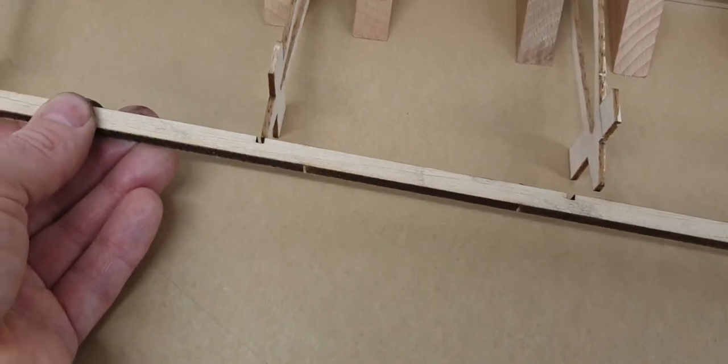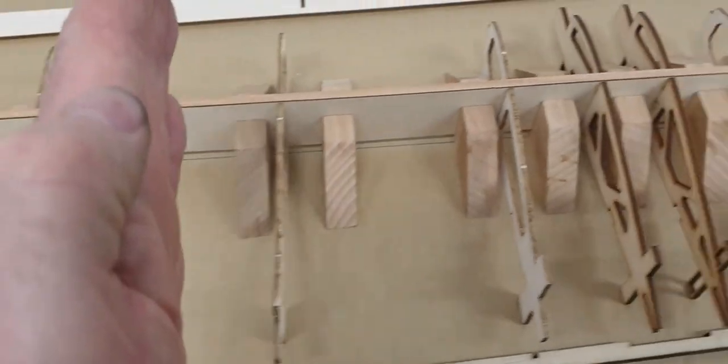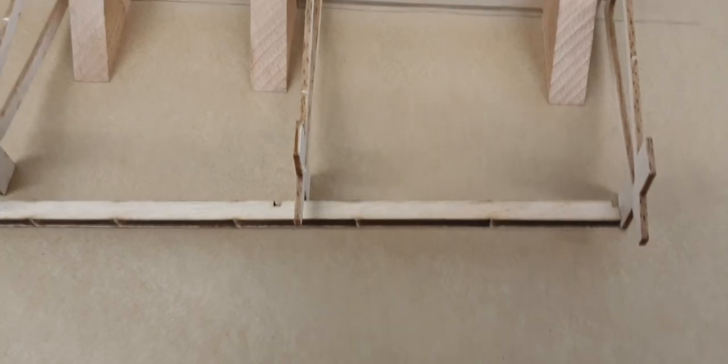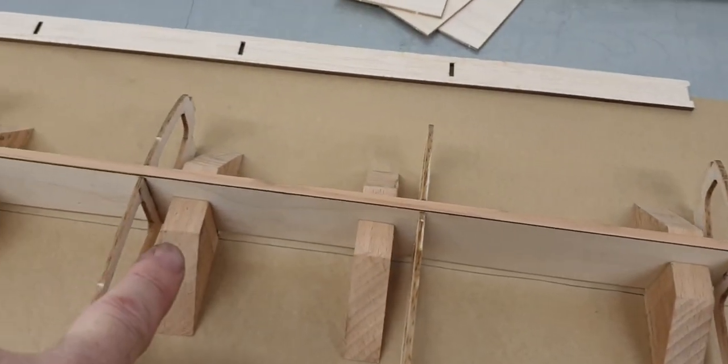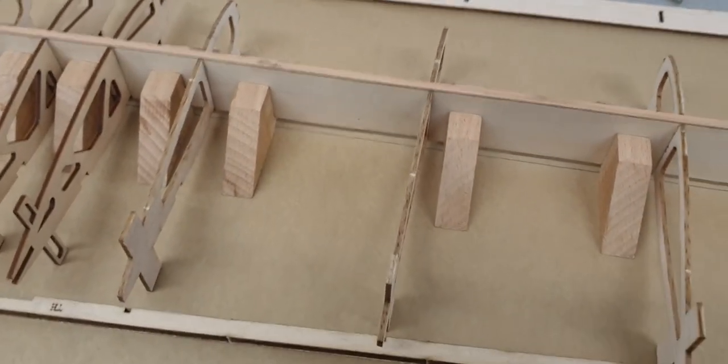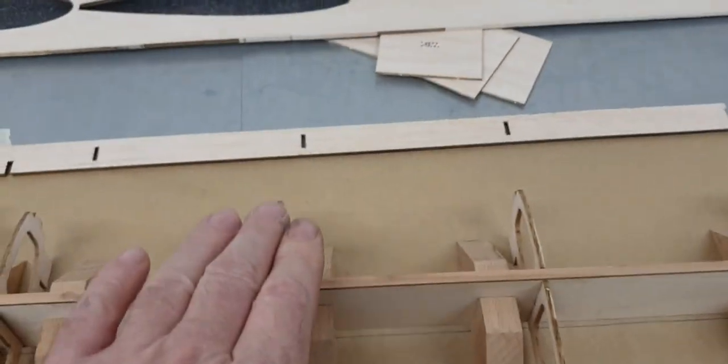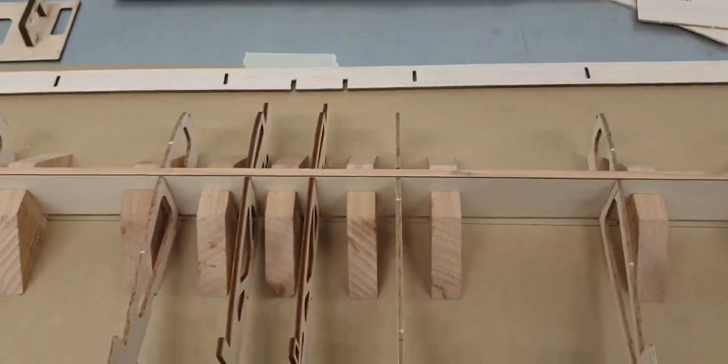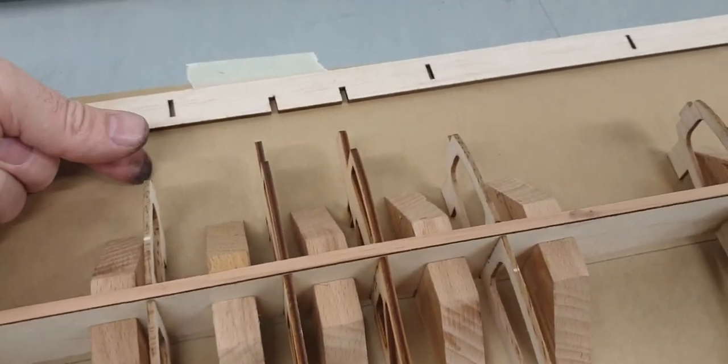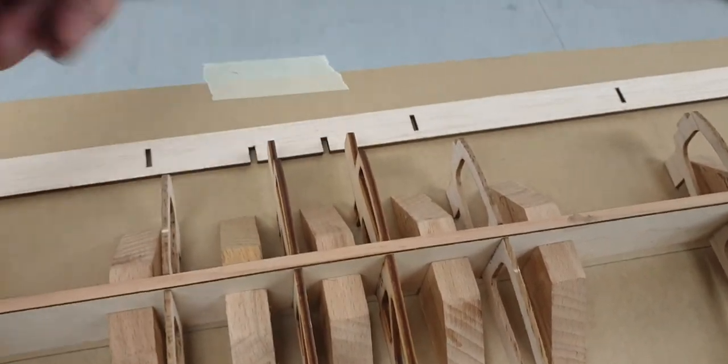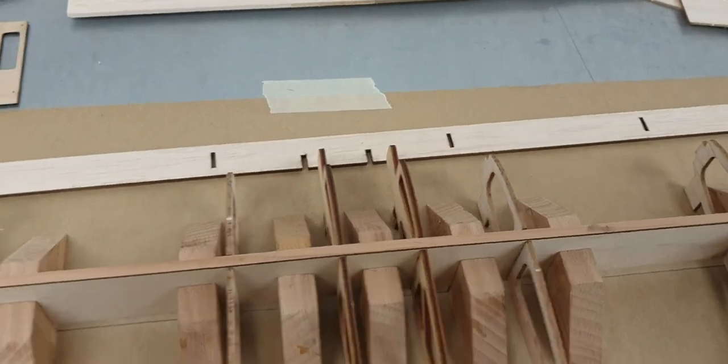These will slot into position and that will square everything up as far as the wing's concerned. Then it's just a matter of going down the joints here with some thin cyano so it obviously sticks those into position. After that we'll be sheeting the front edge, etc., which will be a future video, and also we'll have to attach the real leading edge onto this false one and put the radius onto the front. Again, that will be in a future video.